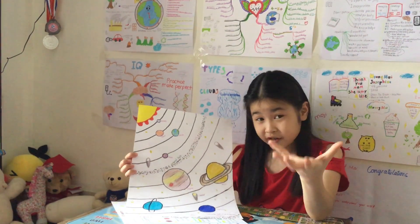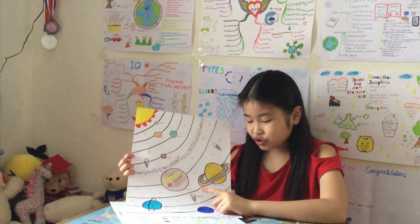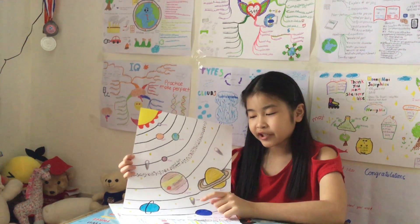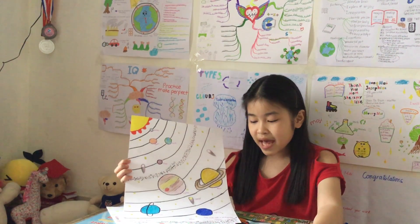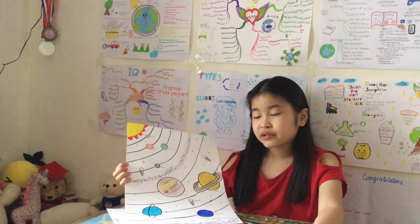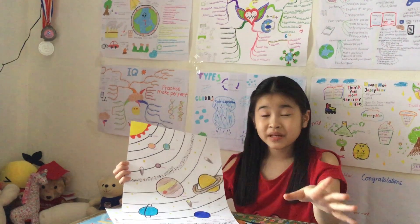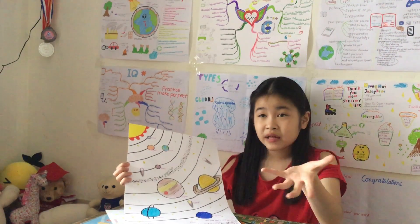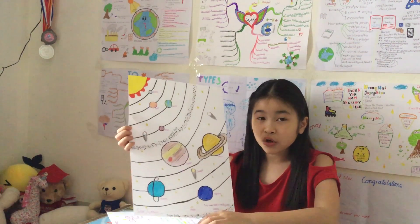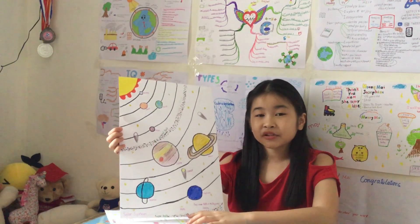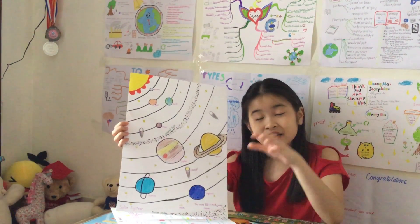Next is Uranus. Uranus and Neptune are called the ice giants, while Jupiter and Saturn are called the gas giants. Uranus is famous for rotating on its side, which means one point of it will never see daylight and another will always be in daylight. That leads us to Neptune, the eighth planet in our solar system.